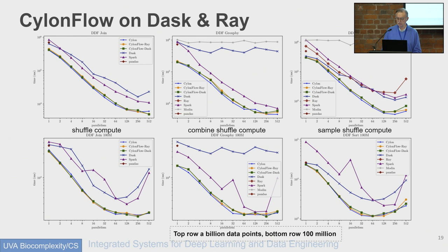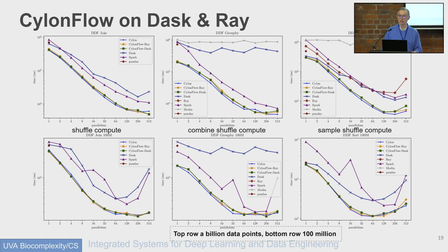This graph compares Cylon natively with Cylon implemented using the Berkeley operating system Ray, and also the Python distributed system Dask. Cylon runs as fast on Slurm and MPI in standard HPC environments, and is equally high performance under Ray and Dask. That's because we use UCX and wrote a very careful interface between UCX and Ray and Dask. This means we can run Cylon on distributed clouds using Ray, or on HPC clusters.